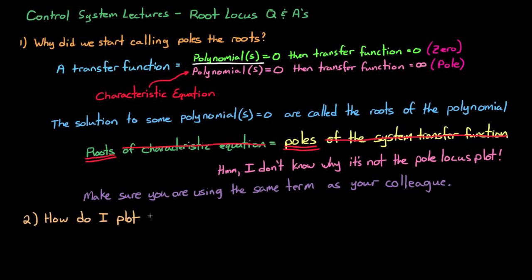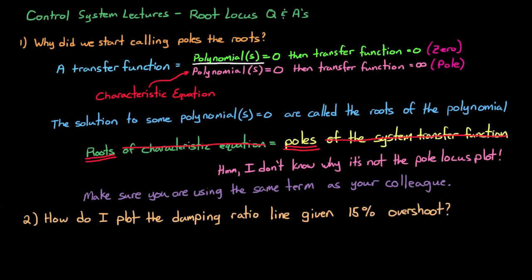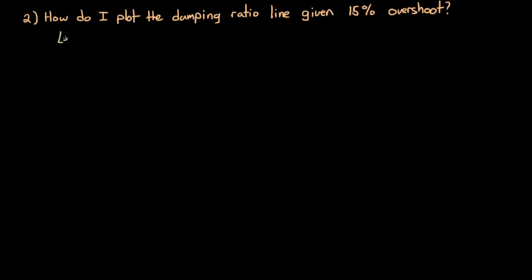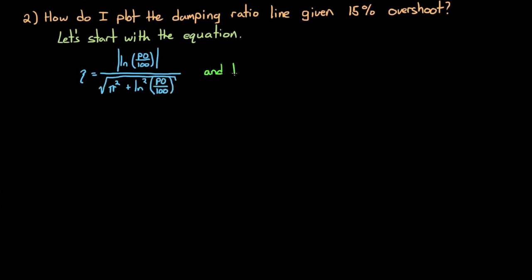For the second question, I was asked how to plot the damping ratio line on a root locus plot with just overshoot given as 15%. Let me start with the equation because it's really easy to calculate. You can go from percent overshoot in the time domain to damping ratio in the s-domain with this equation.